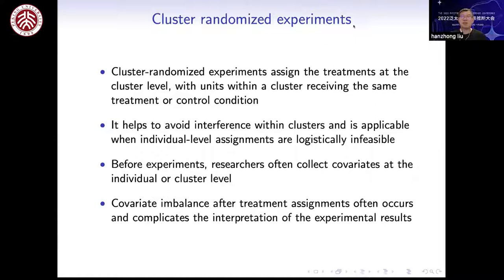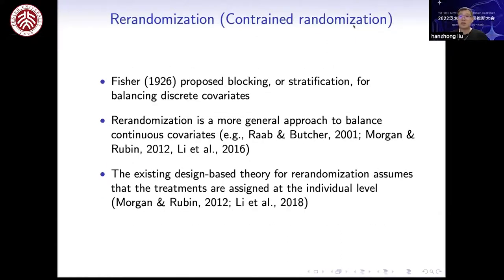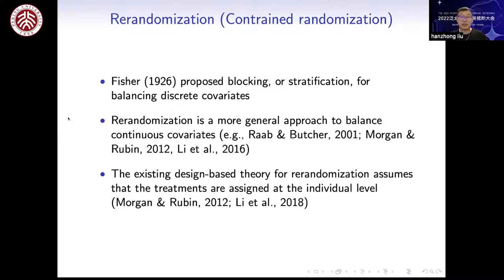Fischer proposed blocking or stratification to balance a few discrete covariates most relevant to outcomes. Re-randomization, also known as constraint randomization, is a more general approach to balance both discrete and continuous covariates. The existing design-based theory for re-randomization assumes treatments are assigned at the individual level, leaving it unclear how re-randomization would theoretically work in cluster randomized experiments. The goal of this talk is to fill this gap.